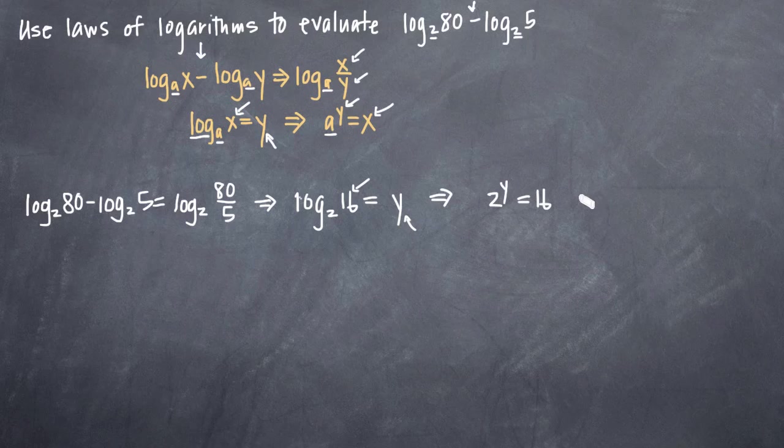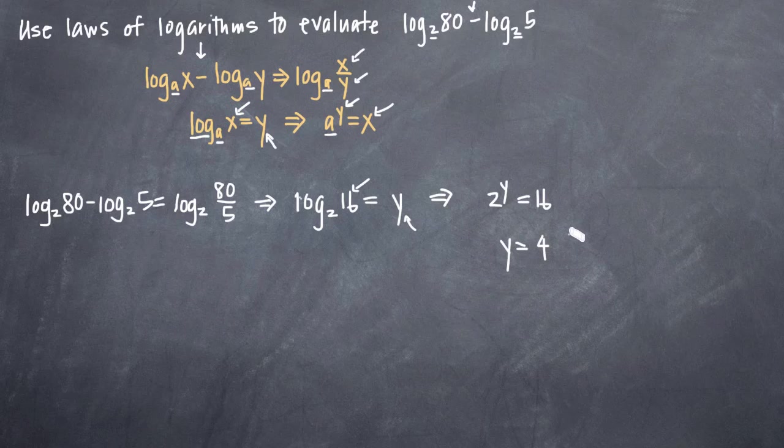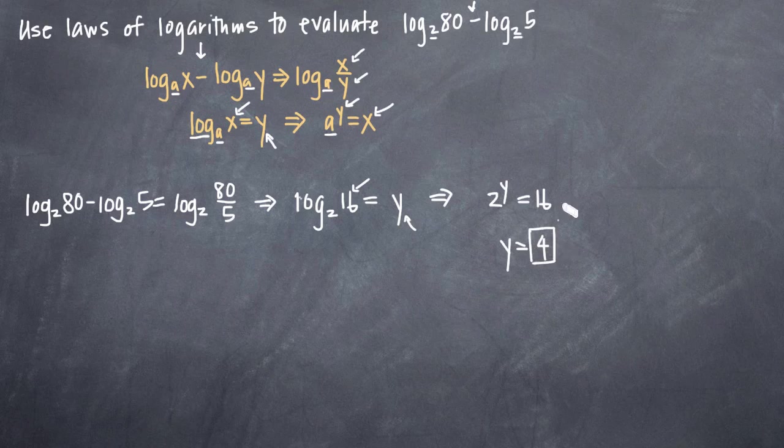And now, of course, at this point, we know that y is just equal to 4 because we know that 2 to the 4 is equal to 16, which means that our final answer here is just 4. We can simplify our original problem, log base 2 of 80 minus log base 2 of 5, all the way down to just 4. And that's it.